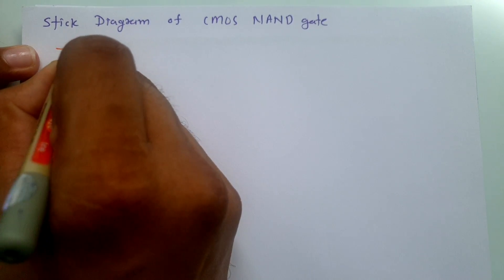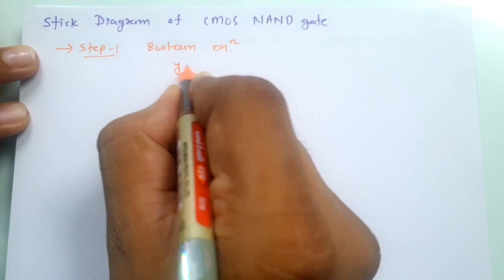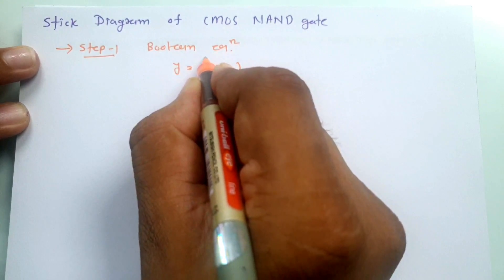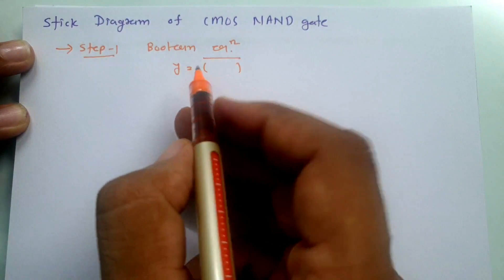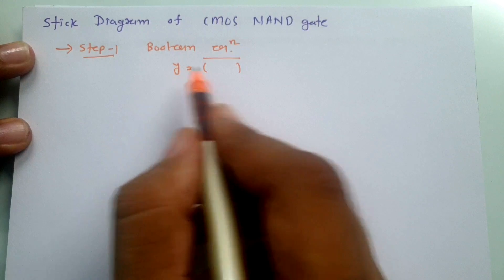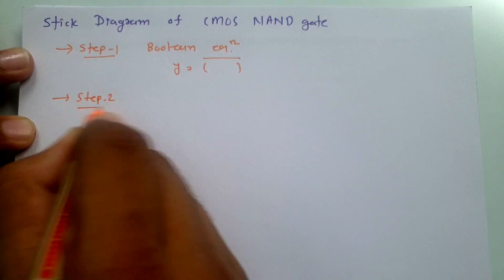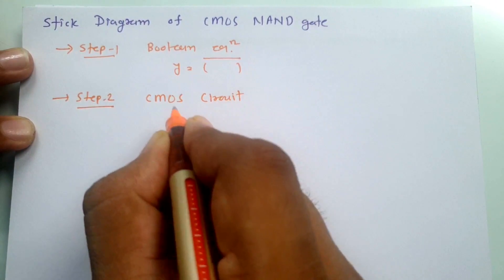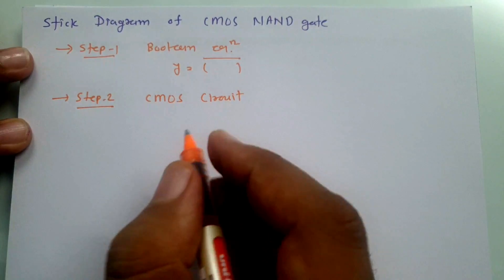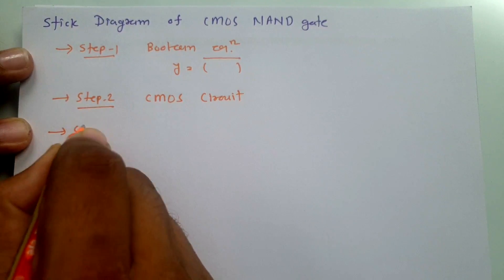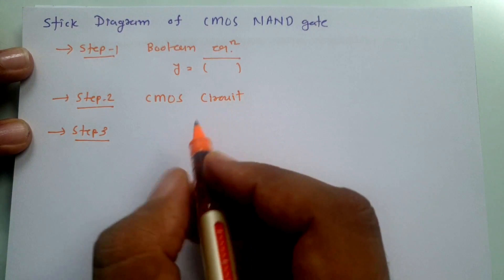The first step is to identify the Boolean equation, and we should have the Boolean equation in complement form — whatever function is there, along with an entire bar. Then in the second step we need to have the CMOS circuit based on that Boolean equation. Finally, we will be plotting the stick diagram along with color code based on the given CMOS circuit.